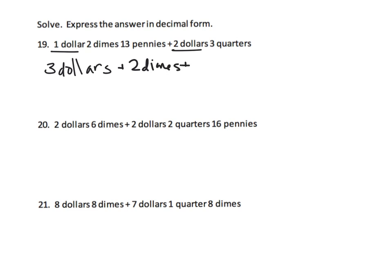Next we have three quarters — we can group those together. Then for the 13 pennies, we can rewrite those as one dime plus three extra pennies, combining the dime with our other dimes to simplify.